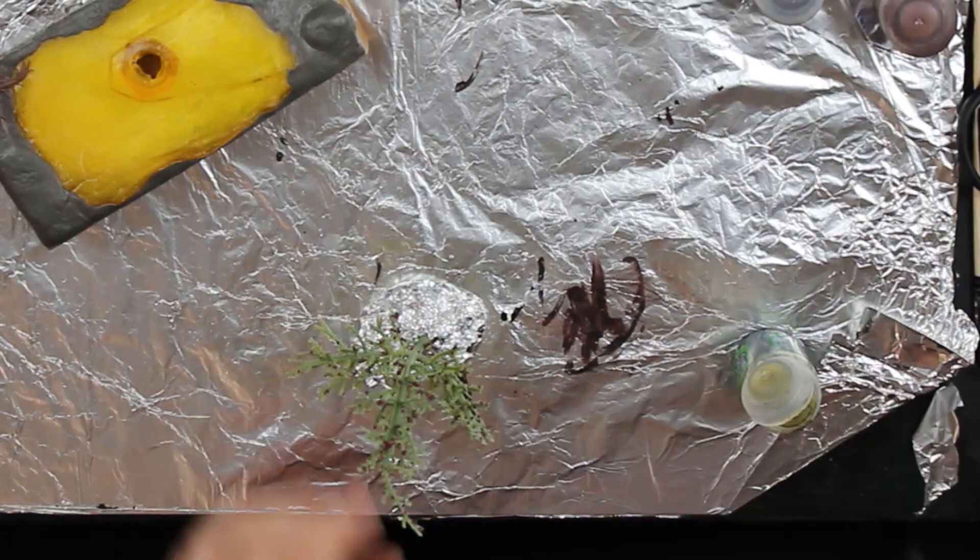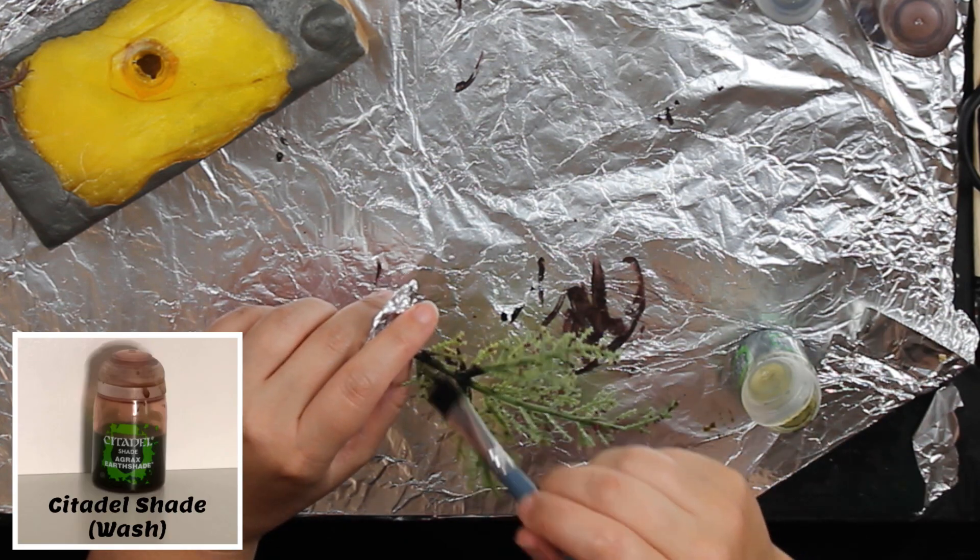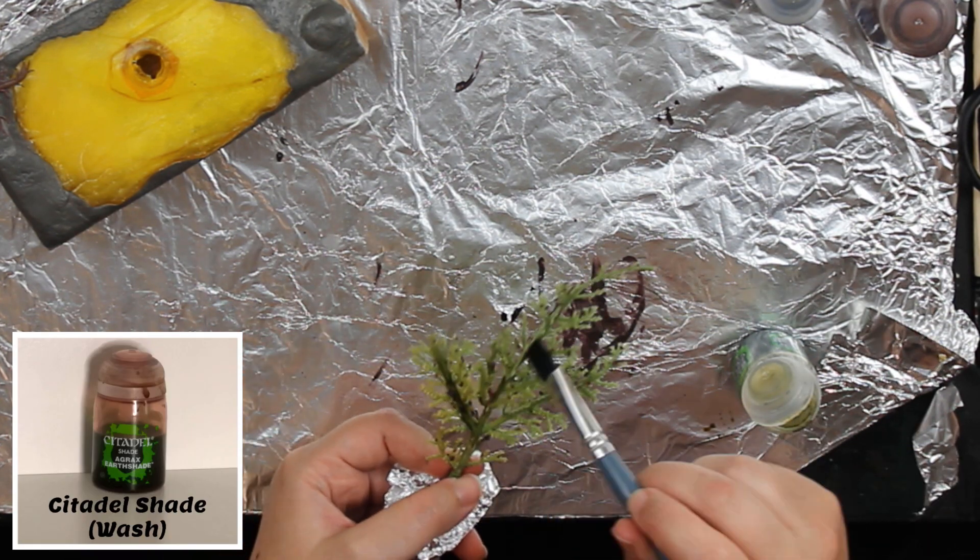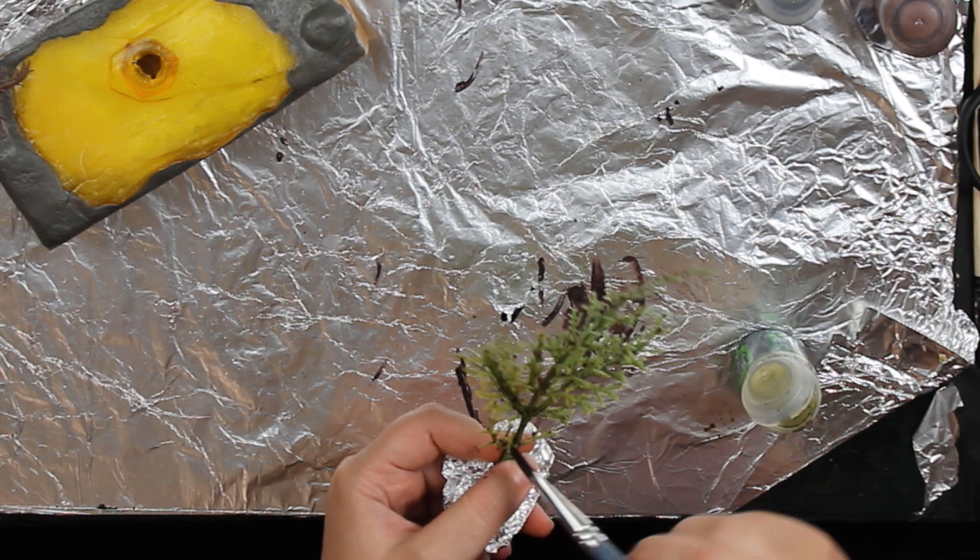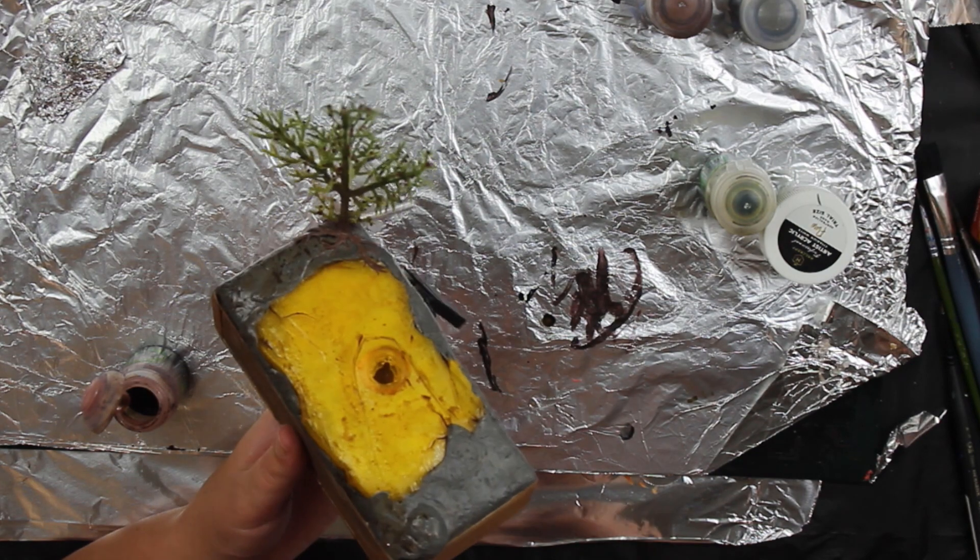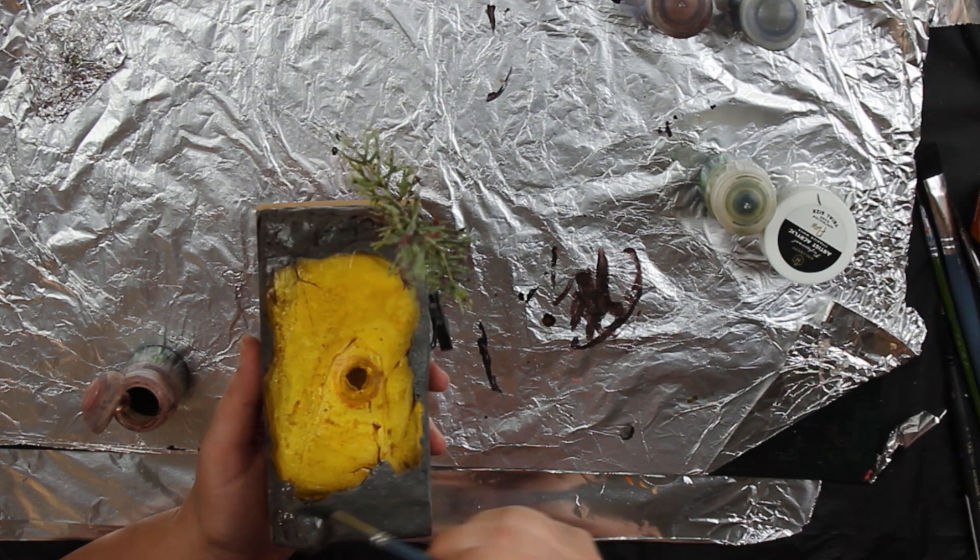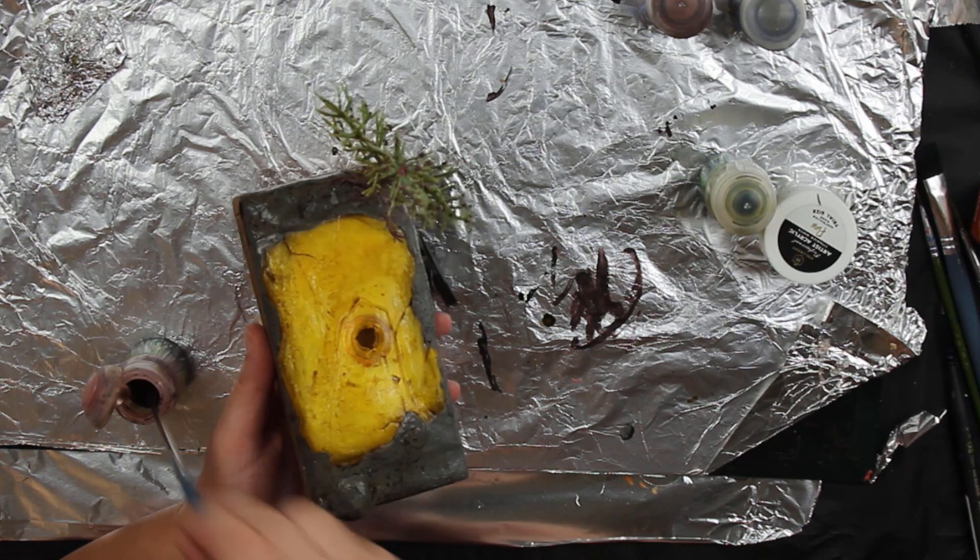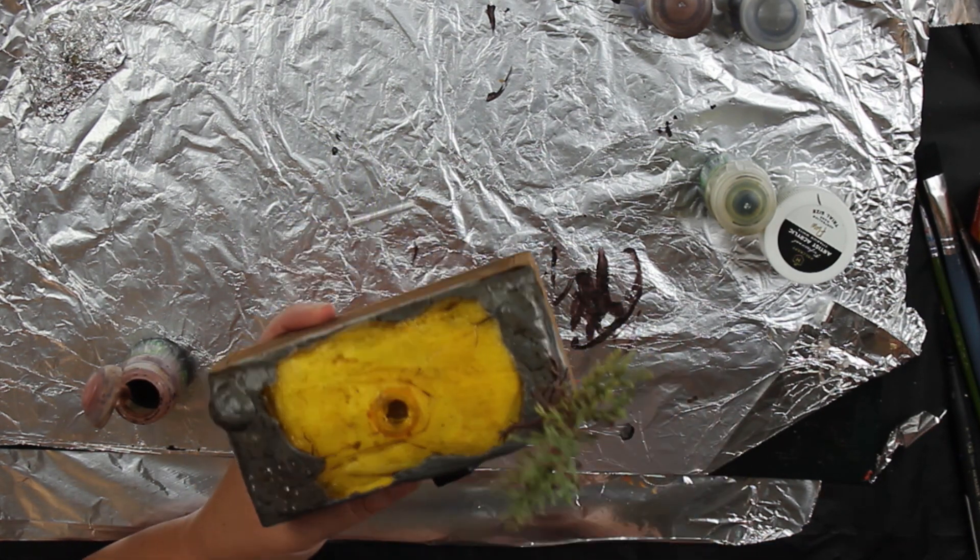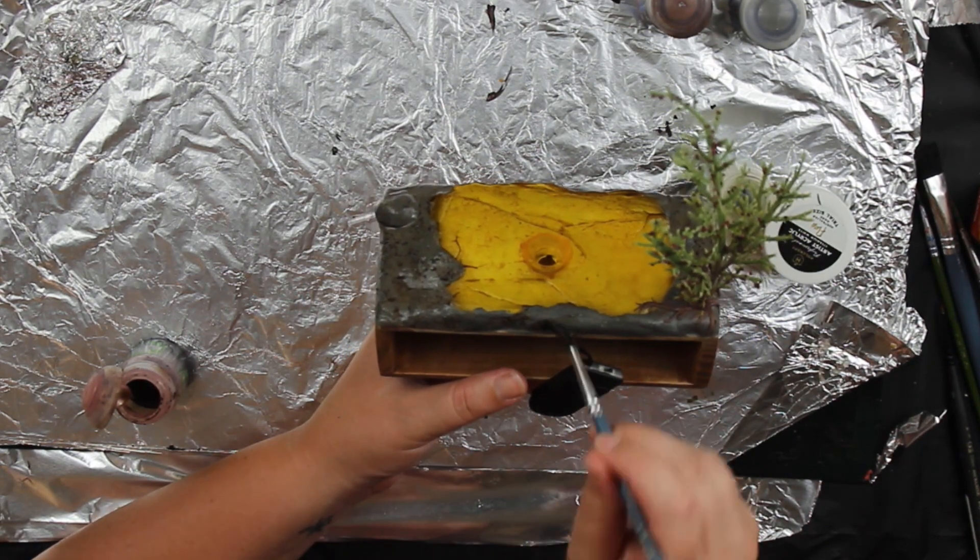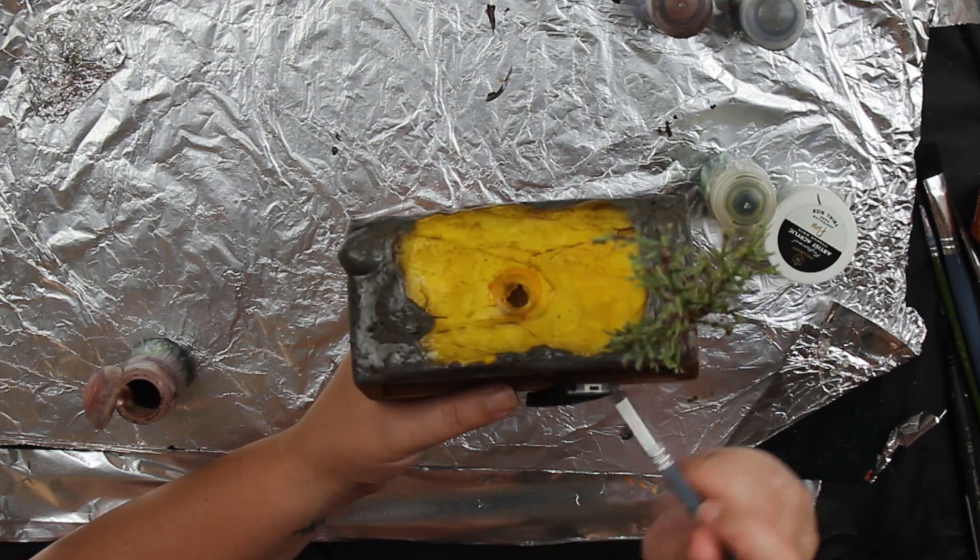Now I'm doing a green wash over the tree to kind of bring out some more tones in it to make it look a bit more real. Now I'm doing a brown wash over the whole base and including the bottom of the tree. I want it to bring some more layers to the tree. And I got rid of the Jurassic Park logo using nail polish remover or acetone.